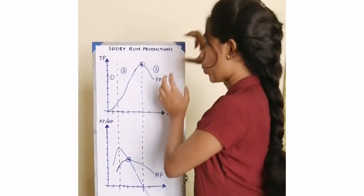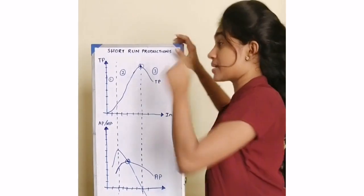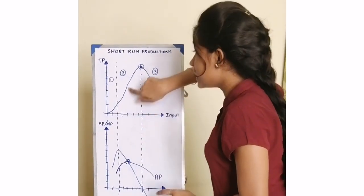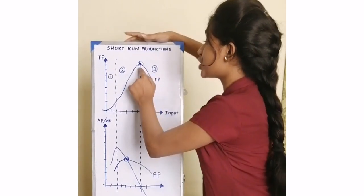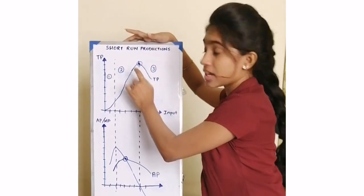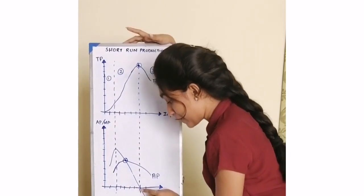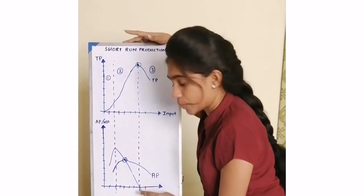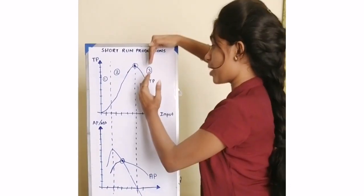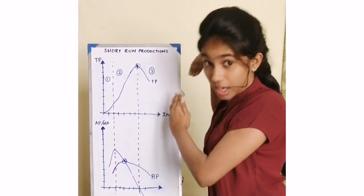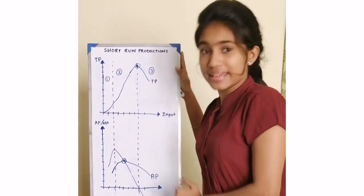In the third stage, the total product will start to decrease. But before that, at the end of the second stage, the total product will reach its maximum point. When it is at its maximum point, MP is at zero — that is the only point at which the third stage starts, where the total product begins to decrease and MP becomes negative.